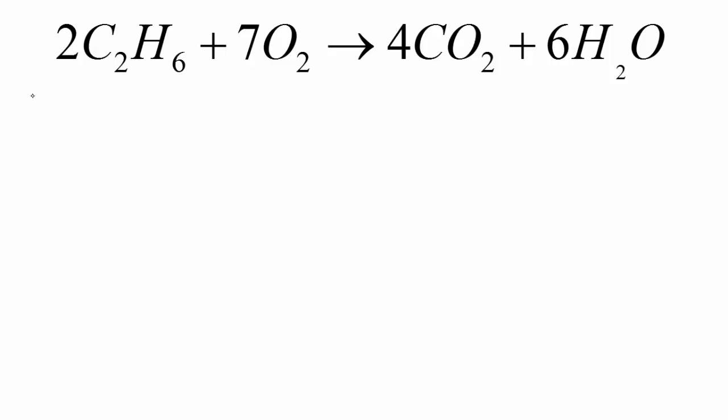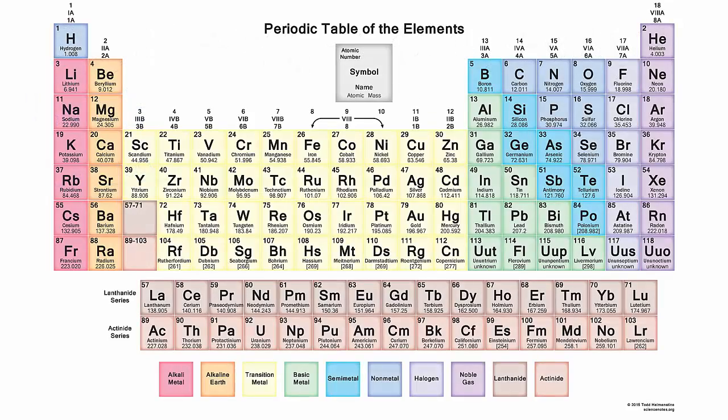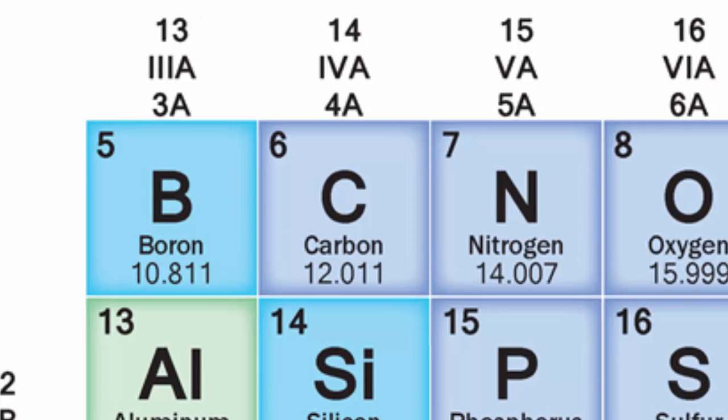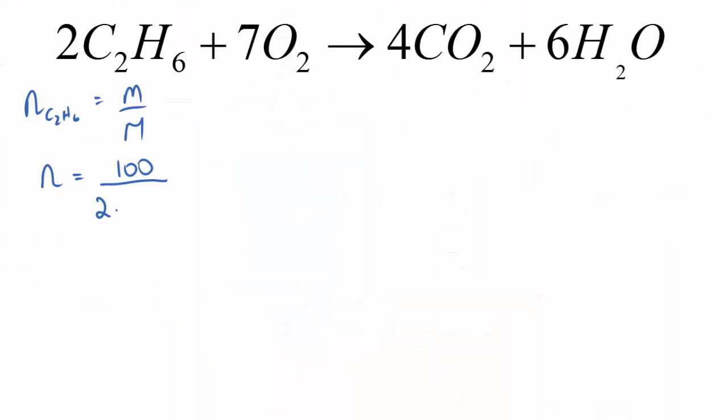We've got 100 grams, so we need moles. We're going to find the moles of ethane by using m on M, the mass on the molar mass. So moles equals 100 grams divided by the molar mass. Going back to our periodic table, we've got the molar mass of carbon and hydrogen. That's going to be two lots of carbon, so two lots of 12, and six lots of hydrogen, so six lots of one. And this is now 3.33 moles. This is our moles of ethane.